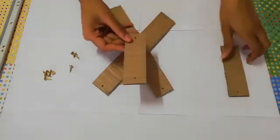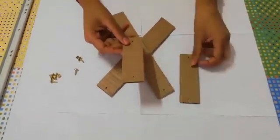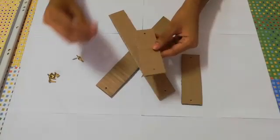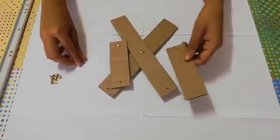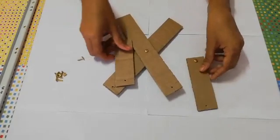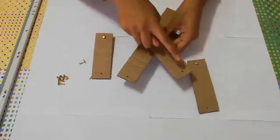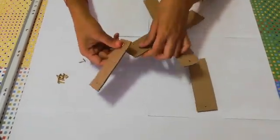Using your two smallest pieces of corrugated cardboard, you are going to put a paper fastener on one side of each piece, and then you're going to attach these pieces to the two longer pieces using the holes that we created.